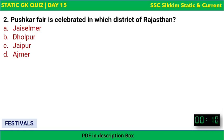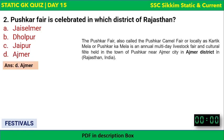Next, Pushkar Fair is celebrated in Rajasthan. The question is: in which district of Rajasthan? The options are Jaisalmer, Dholpur, Jaipur, or Ajmer. The correct answer is Ajmer. The Pushkar Fair, also known as Kartik Mela or Pushkar Kamila, is an annual multi-day livestock fair and cultural festival held in the town of Pushkar, near Ajmer city in the Ajmer district of Rajasthan.